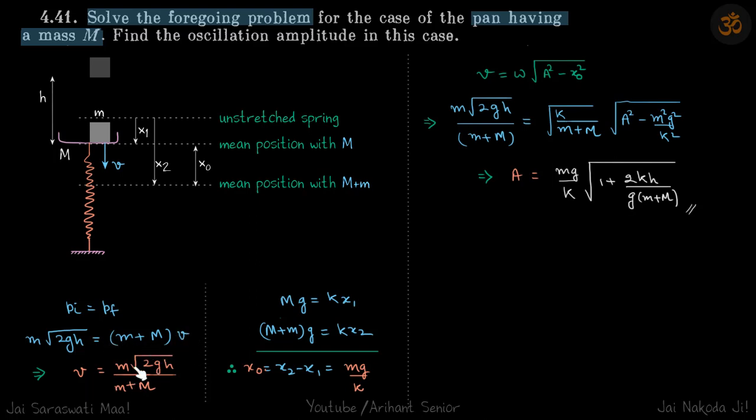So the velocity of the system comes to be this value. This is the velocity at this position and this is the value of that position. We'll put both the velocity and position in this equation. ω will be √(k/(M + m)). We put these values here and get our answer - the amplitude comes to be this.